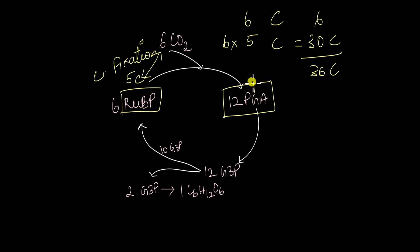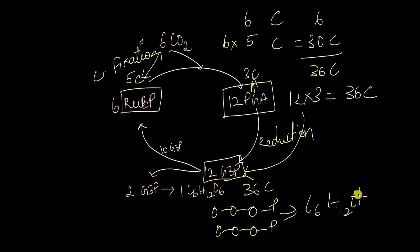Again, you have to remember each PGA has three carbons, right? So 12 into 3 is 36. So 12 molecules of PGA. When it is being converted to G3P in the reduction stage, like I mentioned, there is no change in the number of carbon atoms. So you get 36 carbon atoms here as well. From this, we know that you need two G3Ps to make one glucose because G3P has three carbon atoms. So you need two G3Ps to make one C6H12O6.